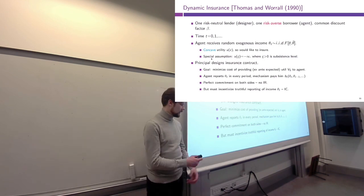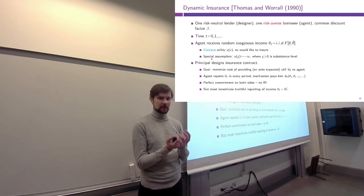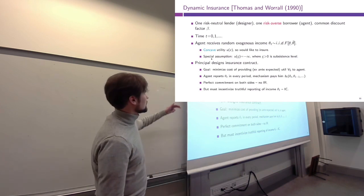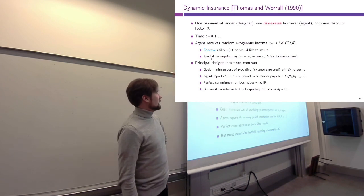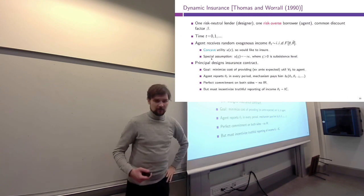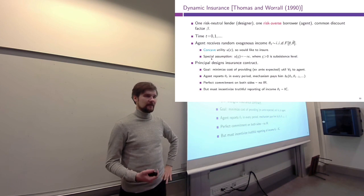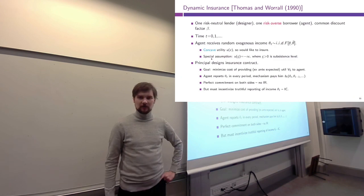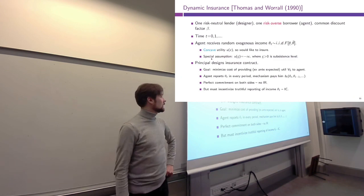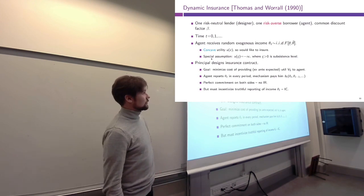We are considering the problem of a government trying to insure its citizens against income risk. The model has one designer — the government — serving as a lender. The government collects taxes when agents' income is high and issues subsidies when income is low. This designer is risk neutral while the representative agent in the economy is risk averse.